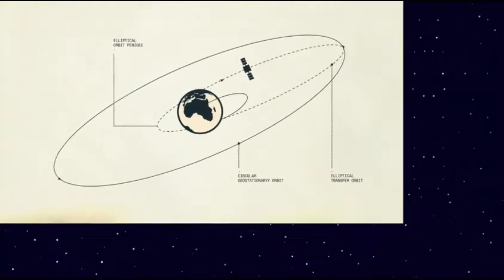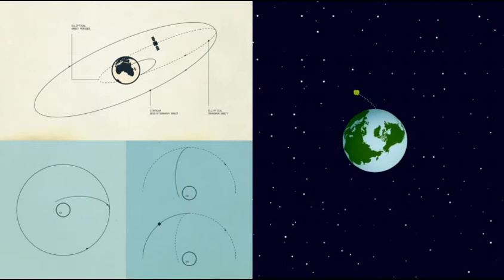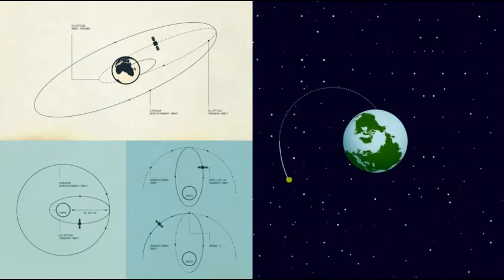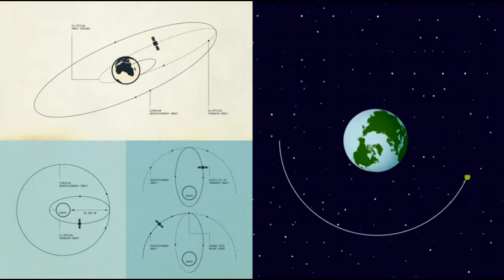you would find an orbit where your apple is going around at exactly the same angular speed as the Earth is turning. This is known as a geostationary orbit.